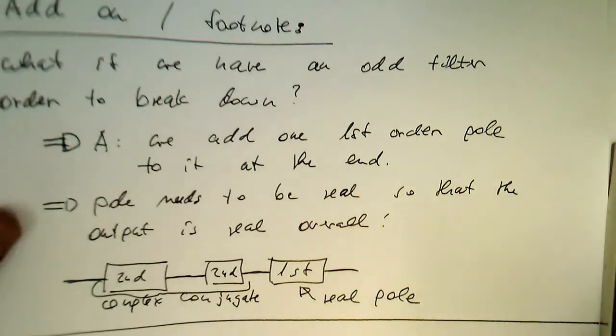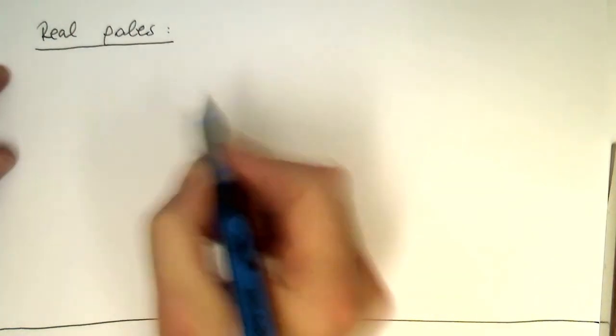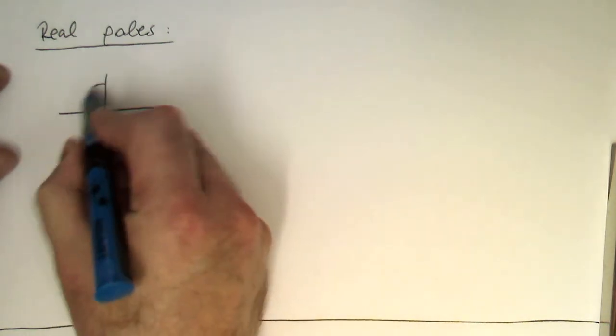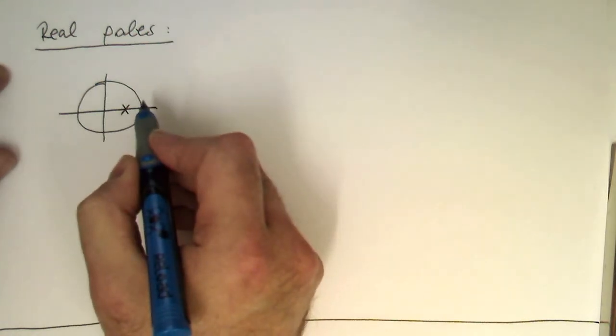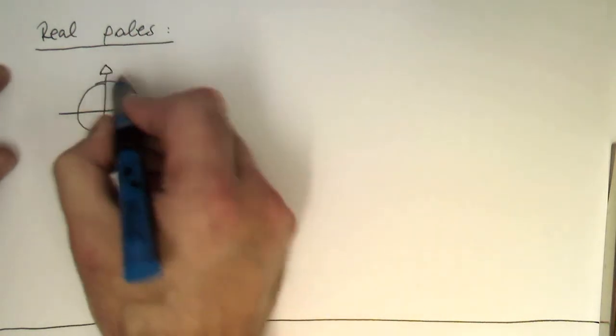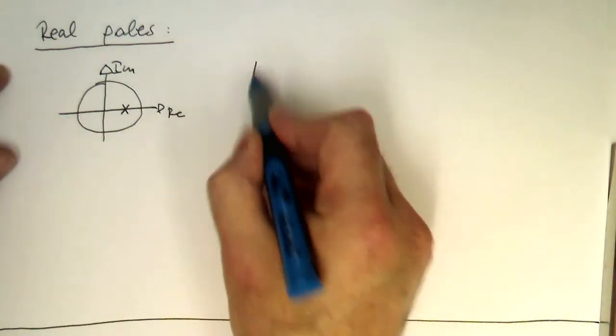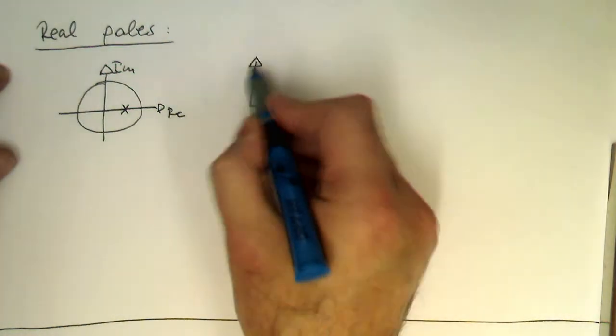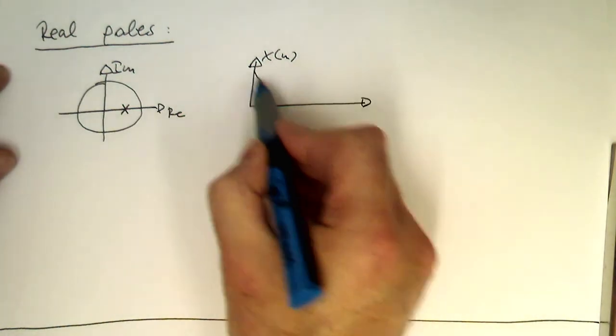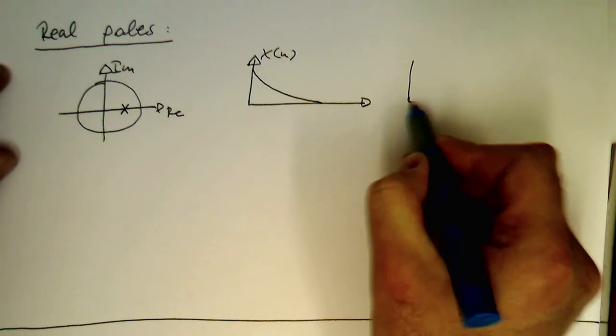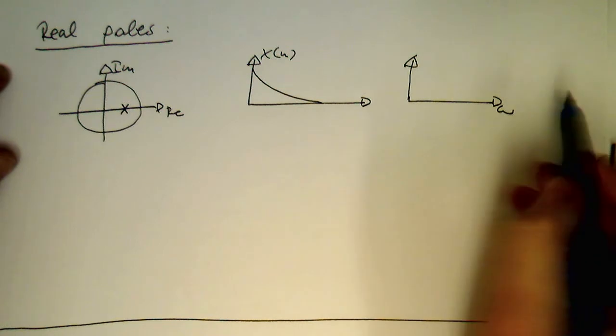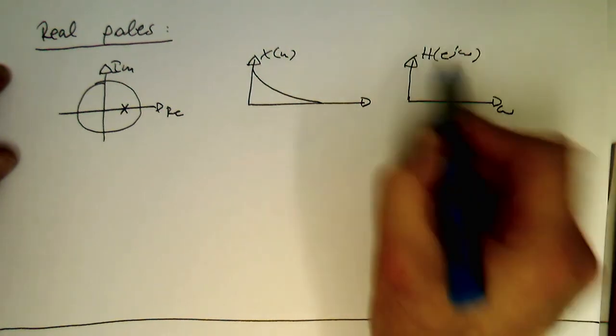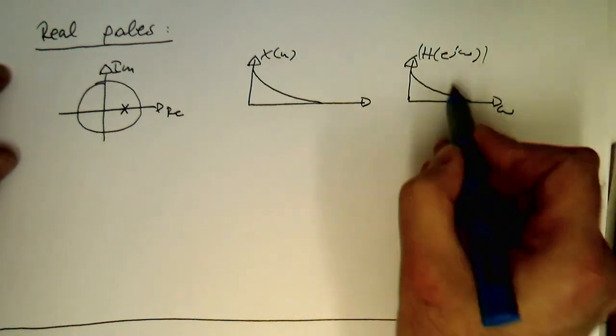So, how do real poles, what do real poles generate? So, if we have a real pole, that's our unit circle here, and the real pole is sitting here, so it's real, and this is here imaginary here, then the output is x is an exponential decay, and the frequency response to that here, e to j omega, then the frequency response to something like this, which is a low pass.